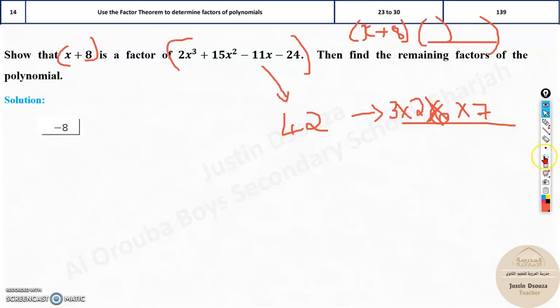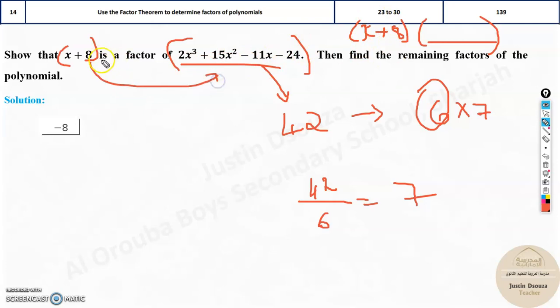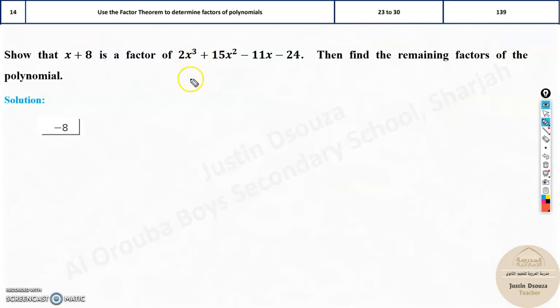I forgot to tell you one more concept. So now over here, how do I find if I know 6 already? I can just divide 42 by 6 and you will get 7, the remaining factor. That is what we will do. We will divide this by x + 8. We will use synthetic division instead of the long division because it's much quicker.